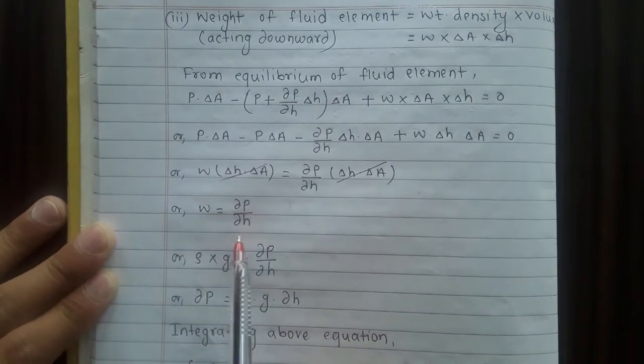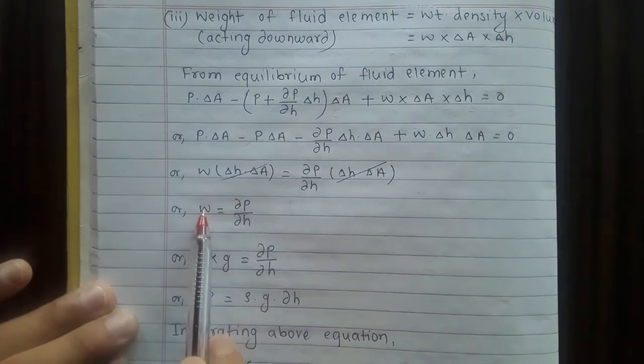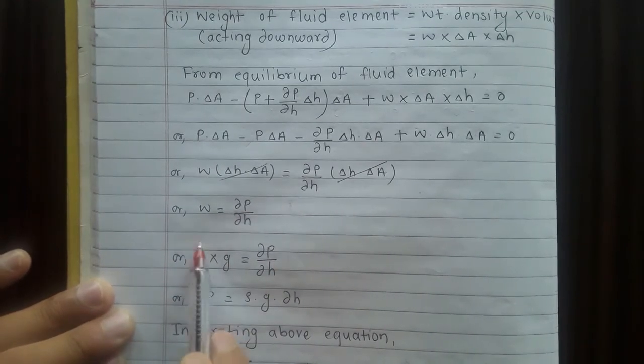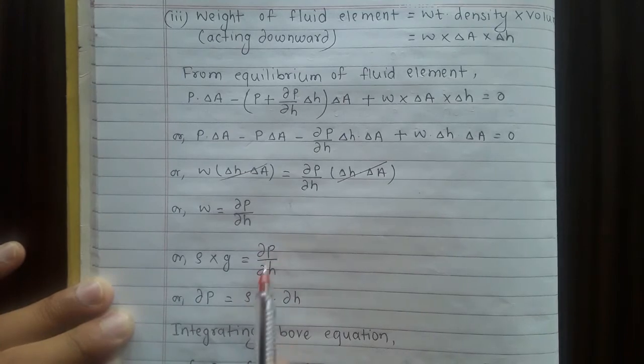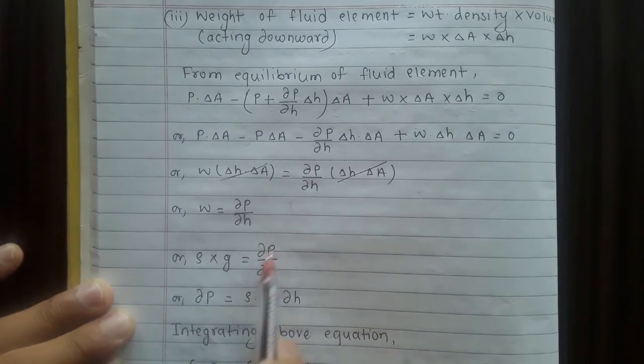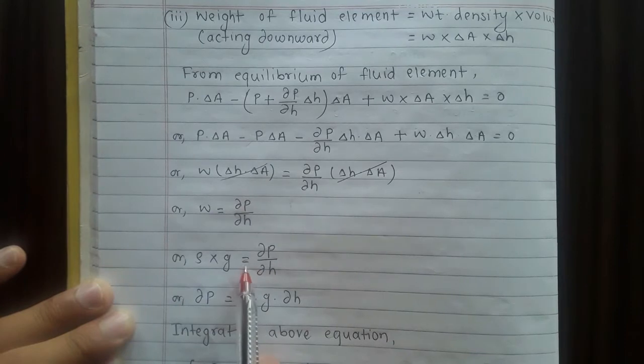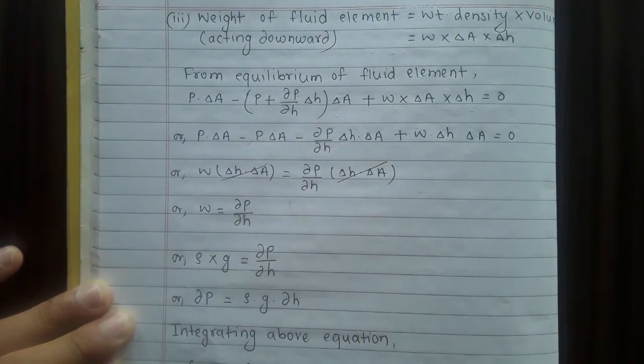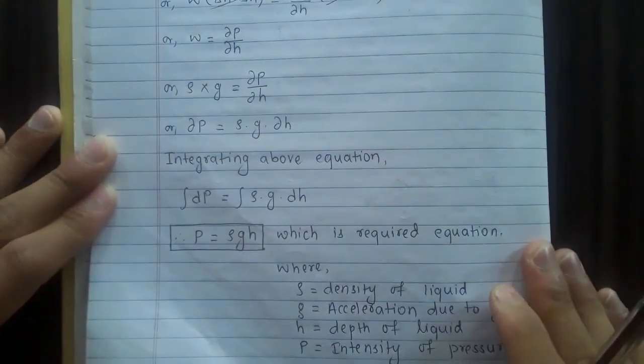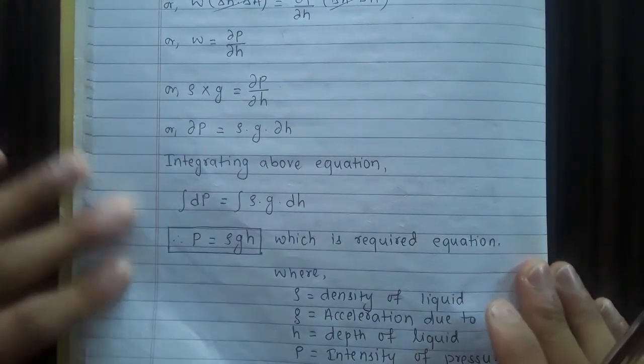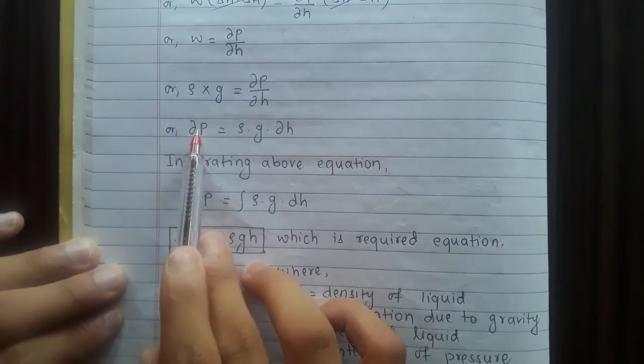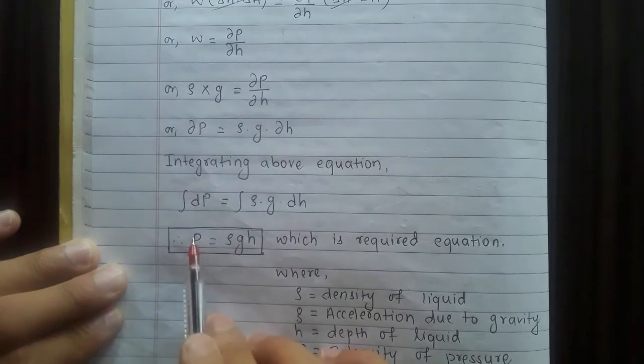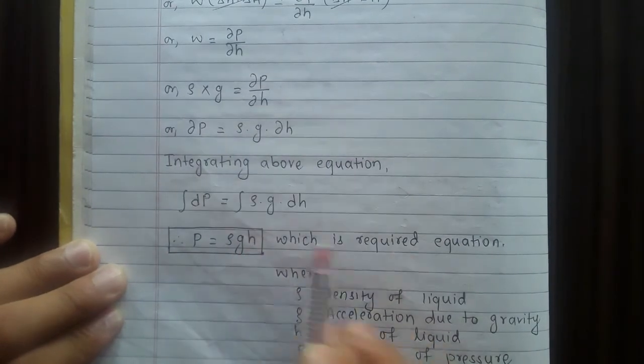W equals dP/dh. W means weight density, which is density into acceleration due to gravity, rho into g. So dP/dh equals rho g, and dP equals rho g dh. Integrating above equation, P equals rho g h, which is the required equation.